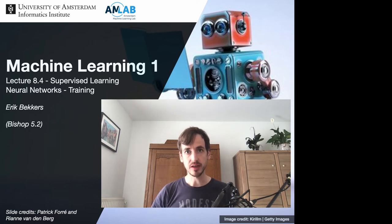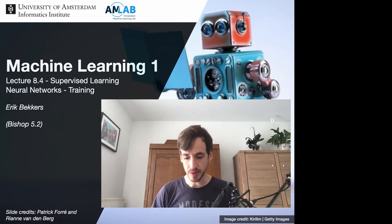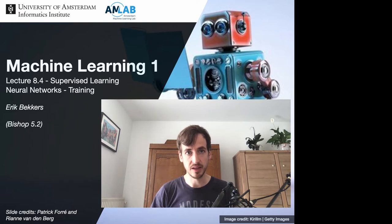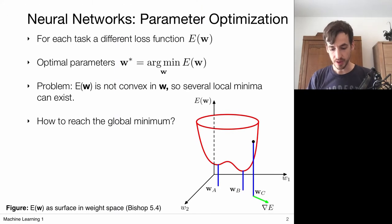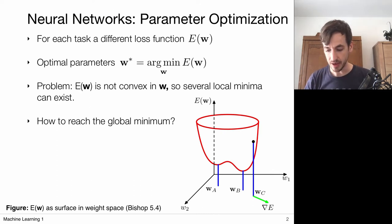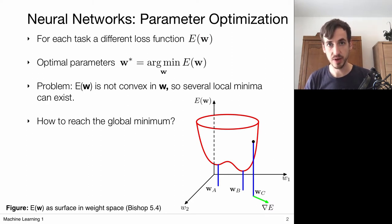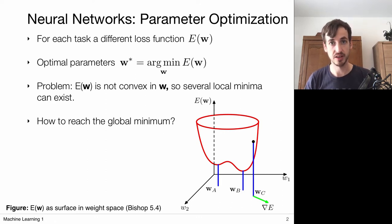Now that we know how to design neural networks and are able to define the loss that we want to minimize, let's recap how we can minimize losses via stochastic gradient descent. In this video we're going to look at what it means to perform stochastic gradient descent in the context of neural network training. The setting is that we have just defined a neural network, so we know how many output neurons we need and which kind of loss to minimize — for example the least squares loss in regression, or the logistic loss or the cross entropy loss in classification problems.